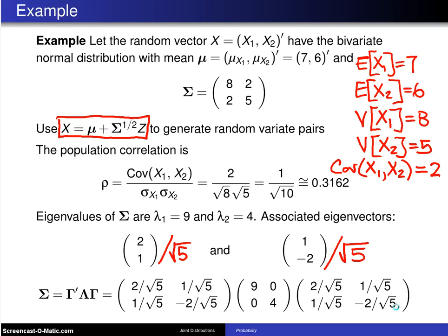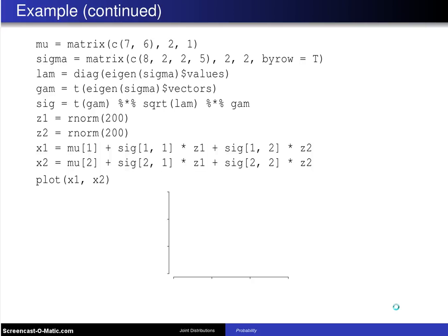So at this point we can go to R and in R we can set up our matrix of means and here is the 2 by 1 matrix of means with elements 7, 6 and that is mu. And here is our variance covariance matrix sigma and that is a 2 by 2 matrix with elements 8, 2, 2, 5. And then we can leave it to R to do the work to figure out this lambda matrix.